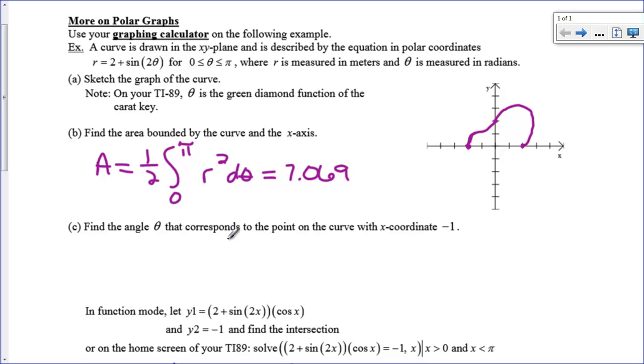Part C says, find the angle θ that corresponds to the point on the curve with x-coordinate -1. I can see here x-coordinate -1, that point is right here. So my angle for θ is bigger than π/2 but less than π. But we actually have to figure out what that is. You have to know some conversion equations to go from polar back to rectangular coordinates. Dealing with x, we know that x = r cosθ. So my x-coordinate is given by r, which is 2 + sin(2θ), times cosθ.